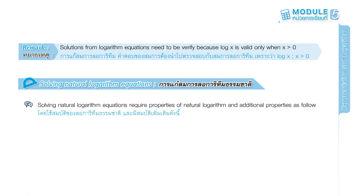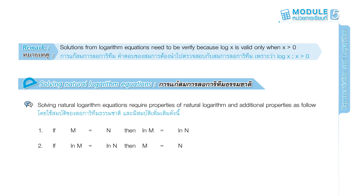Solving natural logarithm equations requires properties of natural logarithm and additional properties. Property 1: if m equals n, then ln m equals ln n. Property 2: if ln m equals ln n, then m equals n.